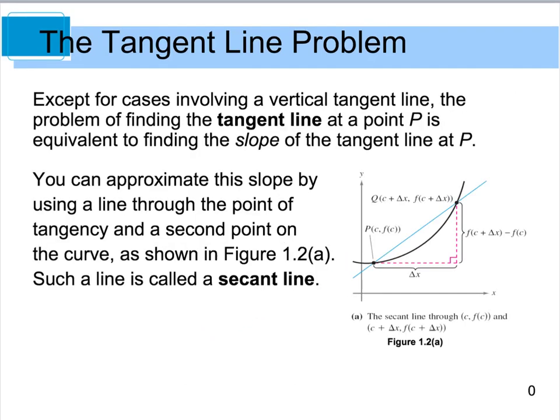And unless we're dealing with a vertical tangent line, the problem of finding a tangent line at the point P is the same thing as finding the slope of the tangent line at P. And if you remember back from pre-calc, we actually did this by first finding the secant line, and we would have your point P here, and then we have some other point out on the graph somewhere else.